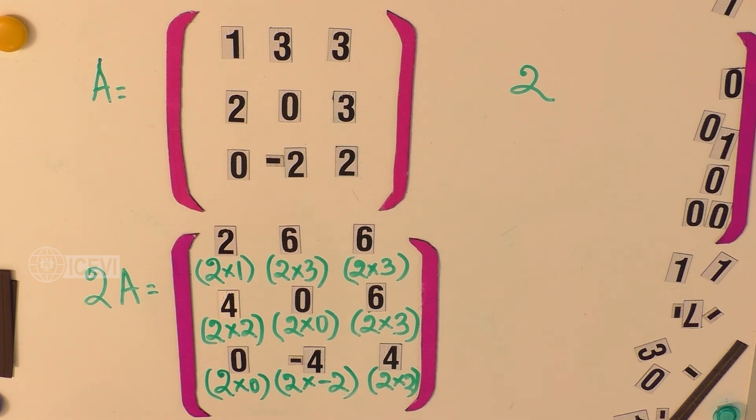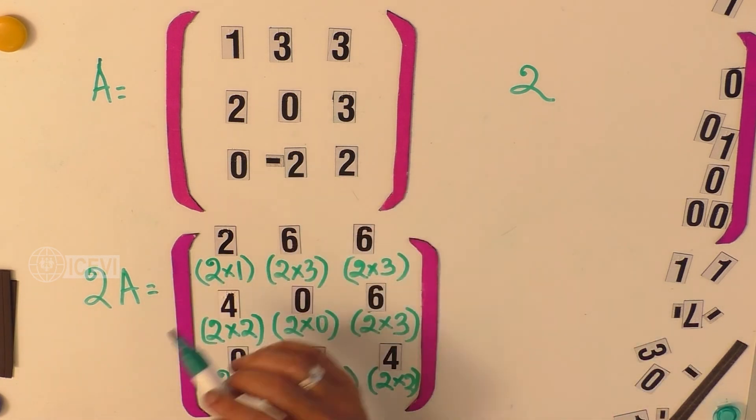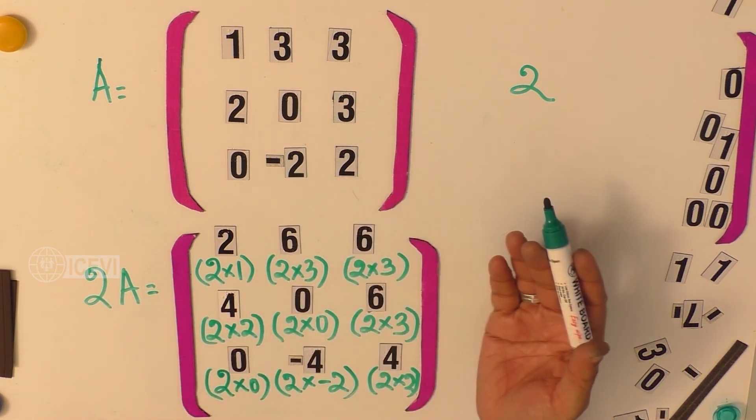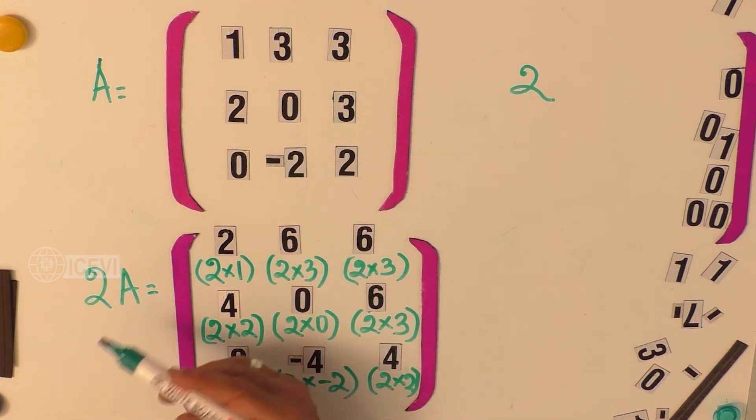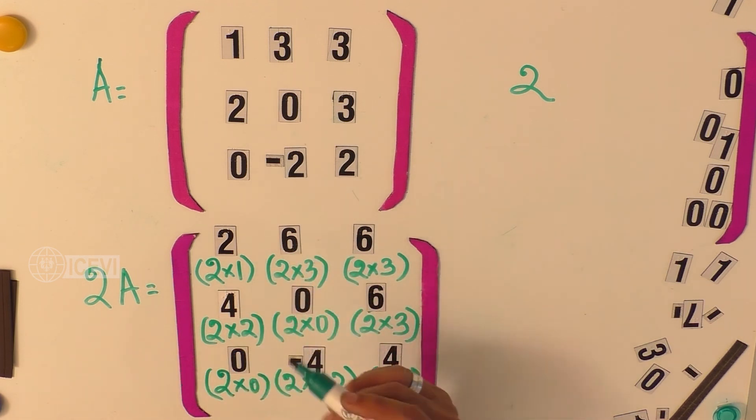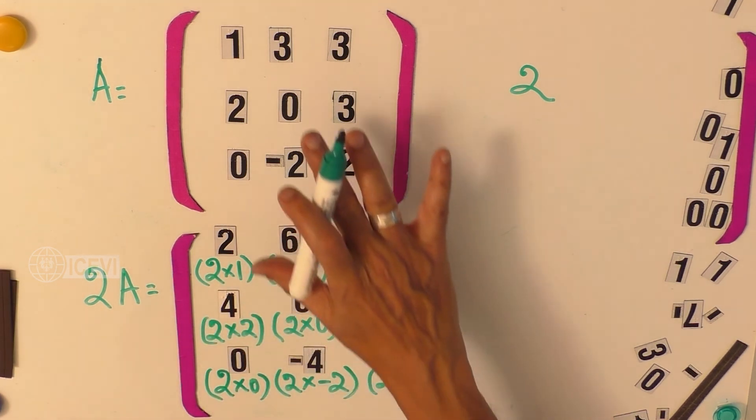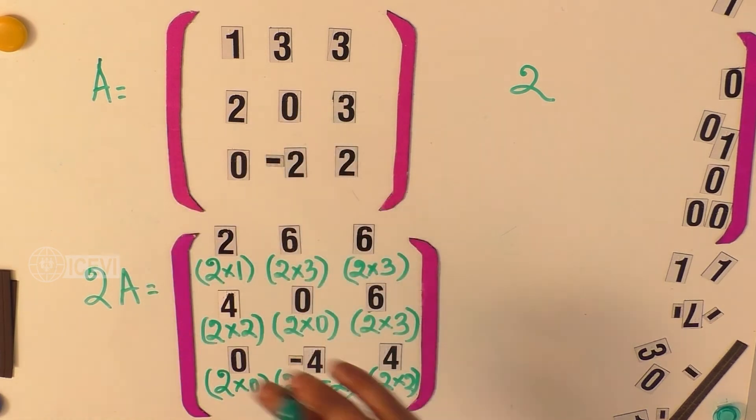This is a very simple one. But the child should understand that the matrix need not be multiplied only by another matrix. The matrix can also be multiplied by another number. Similarly, we can take minus 2, minus 3, whatever may be the number and multiply the original matrix with that particular number.